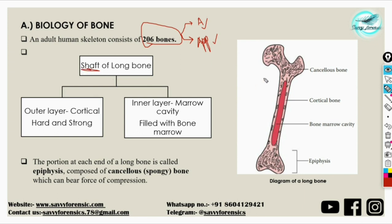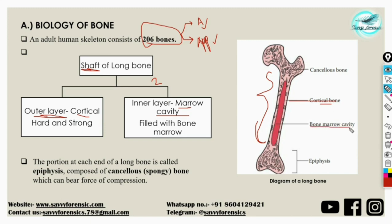If we take the shaft of a long bone — the shaft is this long middle portion — it can be divided into two layers. The outer layer is called the cortical layer, while the inner layer is the marrow cavity. The outer cortical layer is strong and hard, and the inner bone marrow cavity is filled with bone marrow. The portion at each end of a long bone is called the epiphysis, composed of cancellous or spongy bone, which can bear compressive force and is responsible for holding the weight of the body.